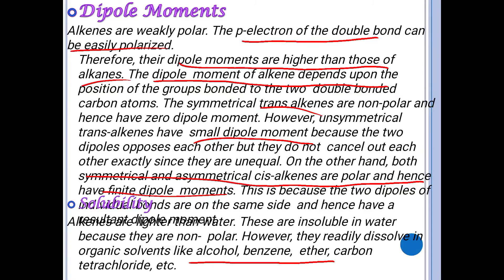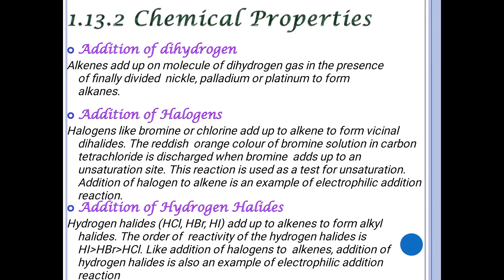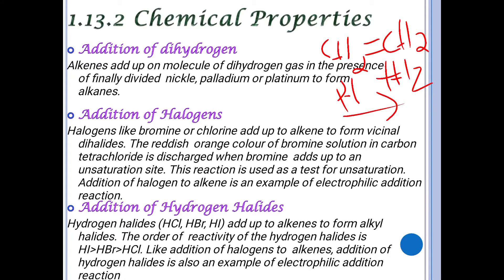Now for the chemical properties of alkenes. The first reaction is addition of dihydrogen. Alkenes add one molecule of dihydrogen gas in the presence of finely divided nickel, palladium, or platinum to form alkanes. For example, treating an alkene with dihydrogen in the presence of a catalyst like platinum or palladium gives the corresponding alkane, such as CH₃CH₃.